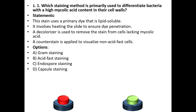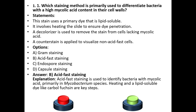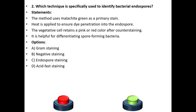Options: A. Gram staining. B. Acid-fast staining. C. Endospore staining. D. Capsule staining. The answer is B, acid-fast staining. Acid-fast staining is used to identify bacteria with mycolic acid, primarily Mycobacteria species. Heating and a lipid-soluble dye like carbol fuchsin are the key steps.